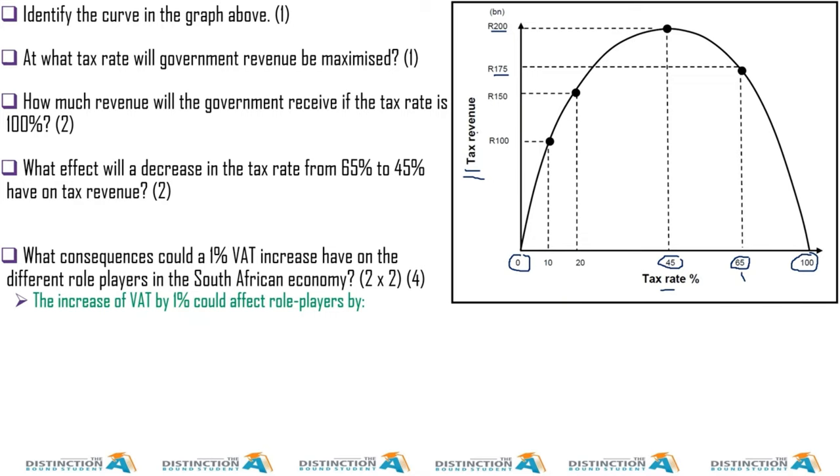So basically, that's the Laffer Curve. Identify the curve in the graph above—it is the Laffer Curve. At what tax rate will government revenue be maximized? That would be 45%. How much revenue will the government receive if the tax rate was 100%? They'll get nothing.